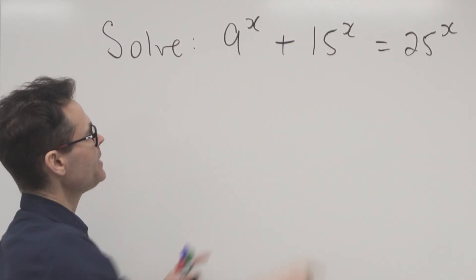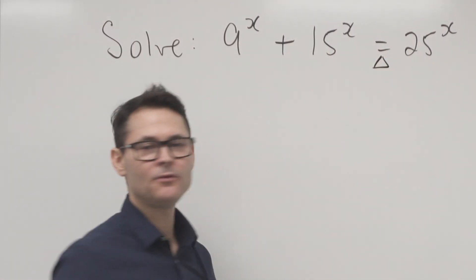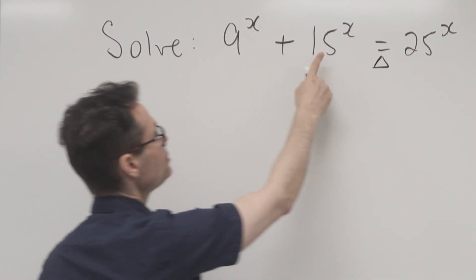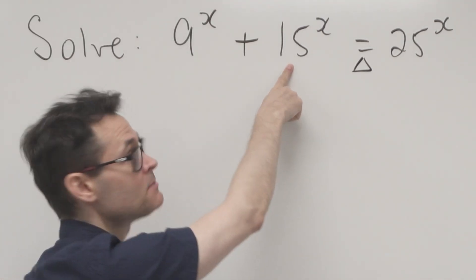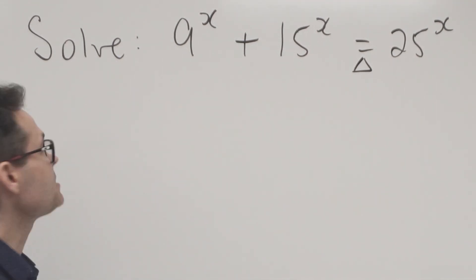Notice this is an exponential equation. I want to know what value of x will balance the equation. That's 3², times 3×5, times 5². So it looks like we're dealing with 3s and 5s here.